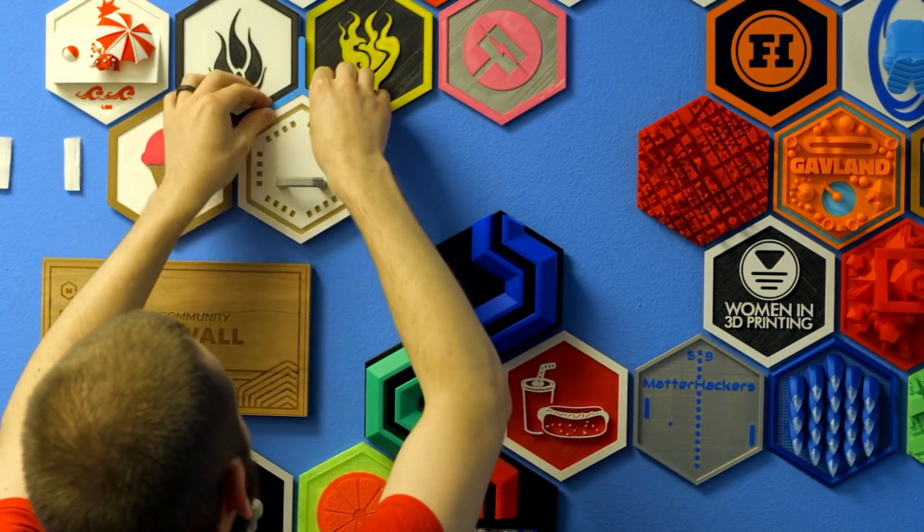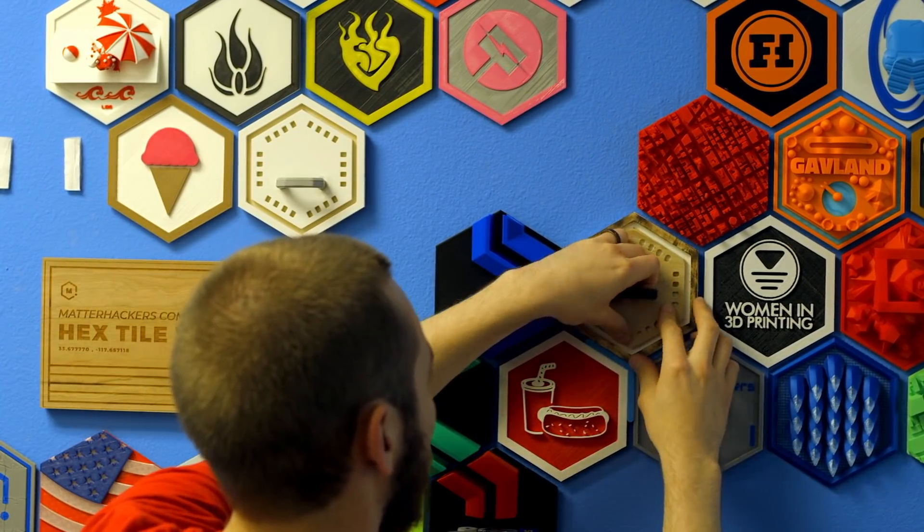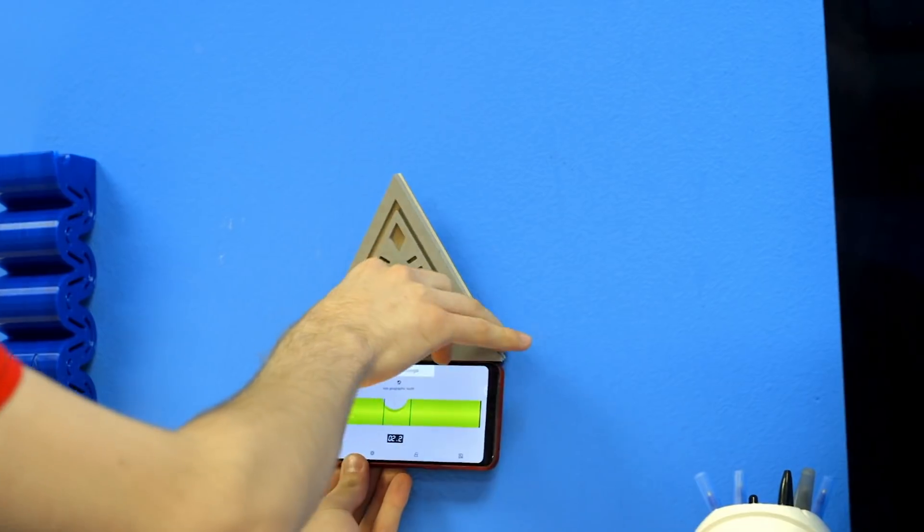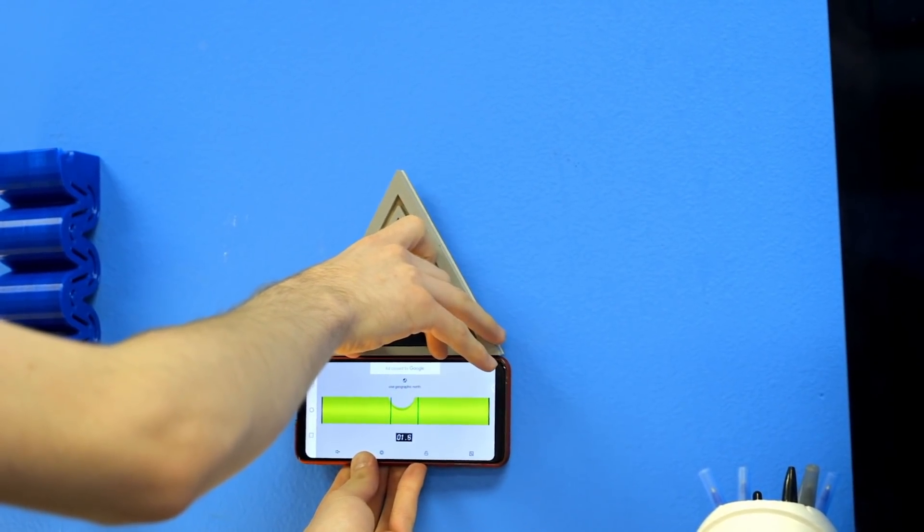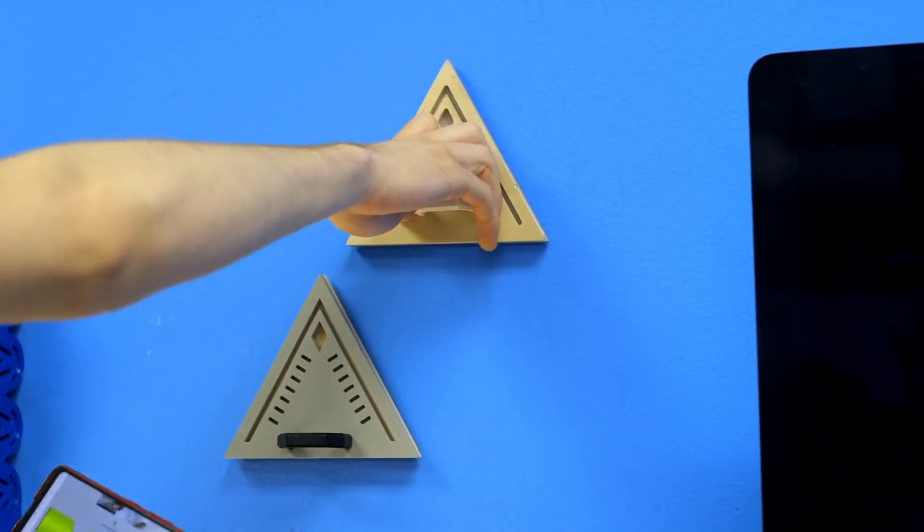A little hook and loop adhesive on the back of these hexagon ones and I could hang them up on the hex tile wall. And then I could do the same for the other ones from the office using a level to make sure that they were hung up nice and proper.